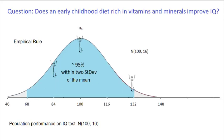Likewise, according to the empirical rule, 95% of the population is within two standard deviations of the mean — or in this case, 95% are between 68 and 132.